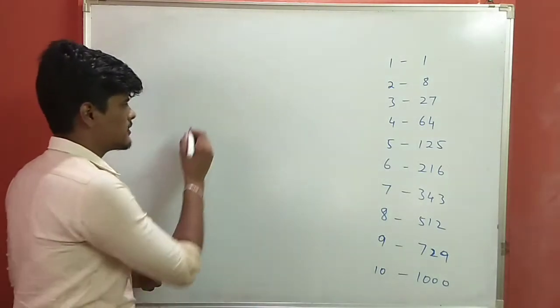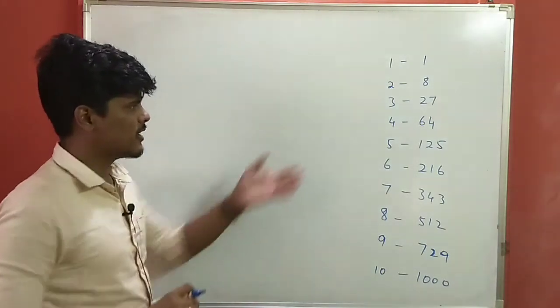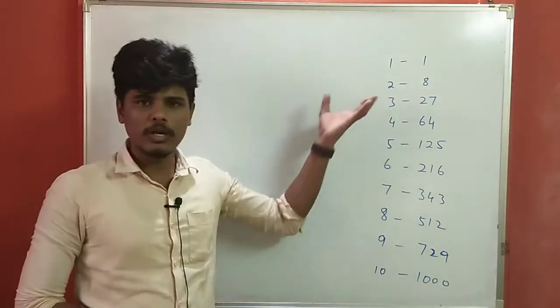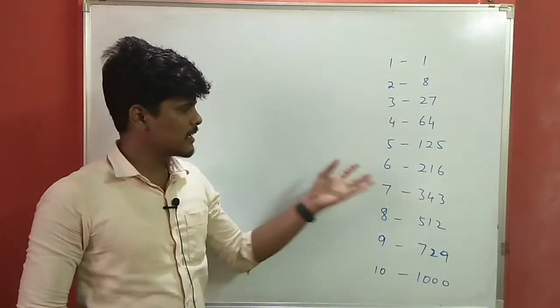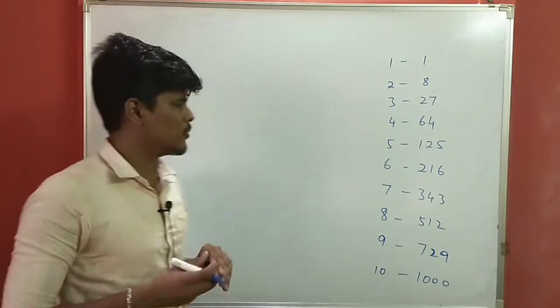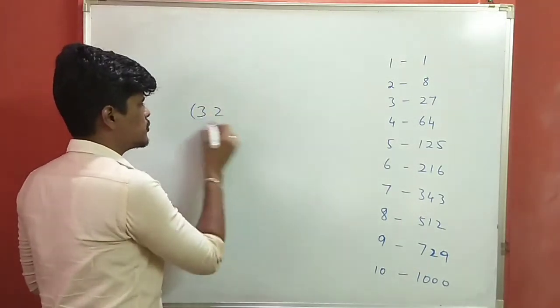First, let's take a simple example. If you want to see a cube, you can see a cube in 1 to 10. So let's try this. If you want to go to this, it will be a little easier. So first, 32 cube.